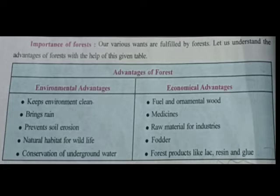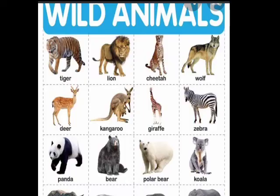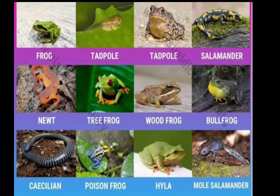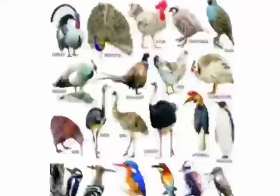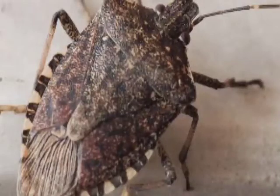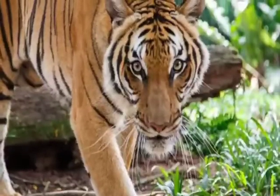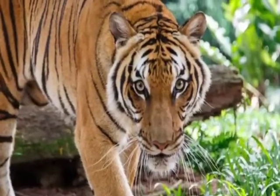Now economical advantages: we use forest material, especially wood for fuel. We also get medicines, raw material, and fodder — fodder means food for wild animals — and other forest products like lac, resin, and glue. A variety of wildlife resides in the forest, like wild animals, mammals, birds, small creatures, aquatic animals, amphibians, insects, reptiles, bugs, etc. Tigers are seen in various parts of our country.